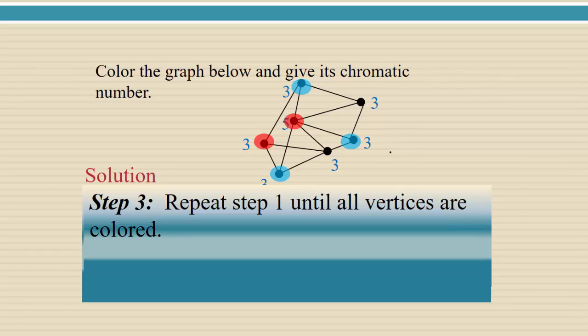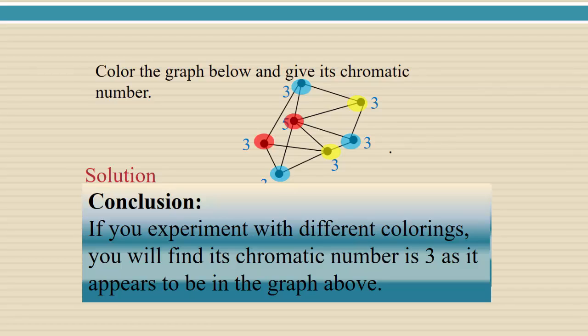So I'm going to repeat step one until all the vertices are colored. Choosing a third color, in this case I picked yellow, but again the actual color doesn't matter, just that it's different from the others, and I can color both of the remaining vertices yellow. So here we have a coloring of the graph. If you experiment with different colorings of this same graph, you're going to find that you always need at least three colors, so the chromatic number is going to turn out to be three.